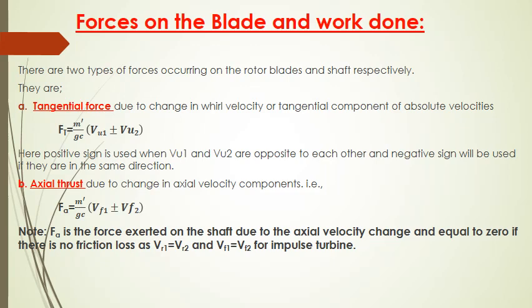Mathematically, tangential force Ft equals (m-dot / gc) into (vu1 ± vu2), where vu1 plus or minus vu2 is the net difference in tangential component of absolute velocity at inlet and outlet, m-dot is mass flow rate, and gc is the gravitational constant. Positive sign is used when vu1 and vu2 are opposite to each other, and negative sign is used when they are in the same direction.